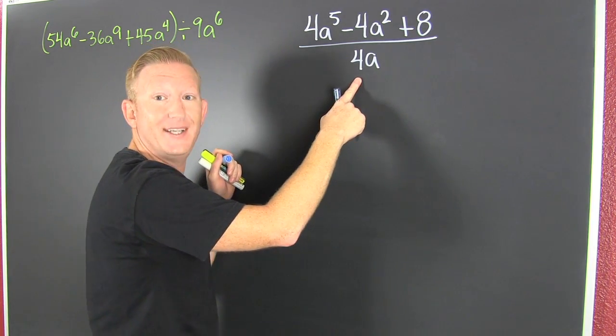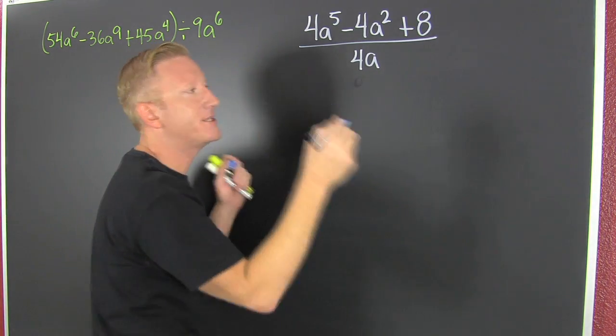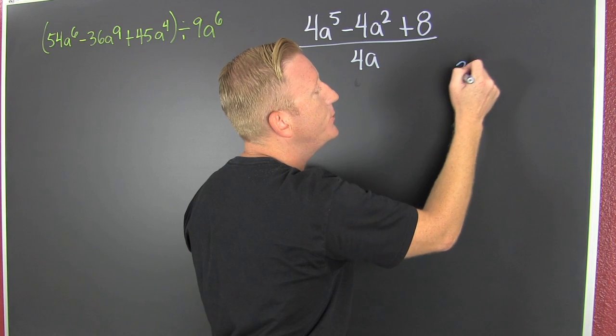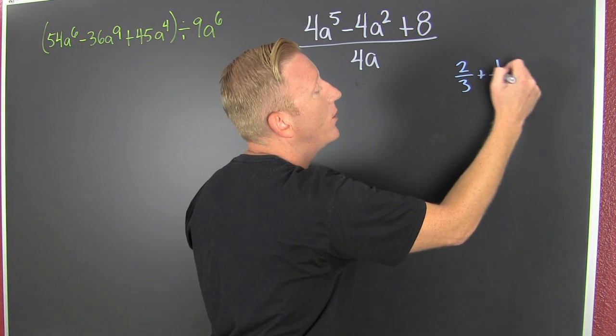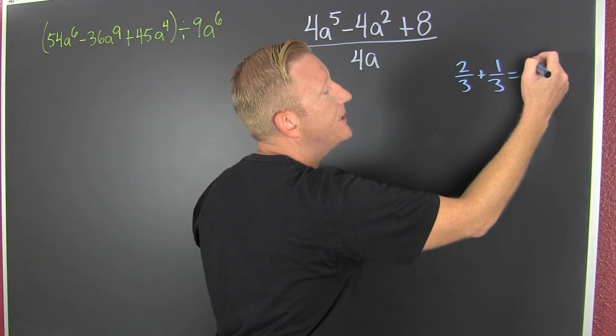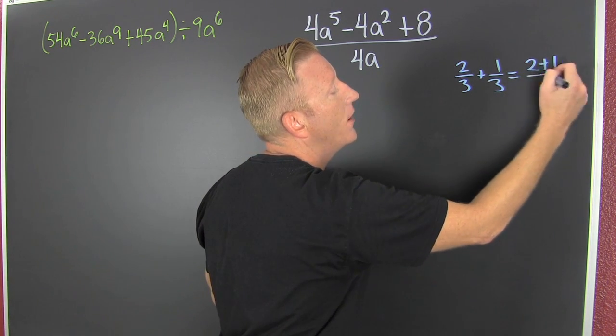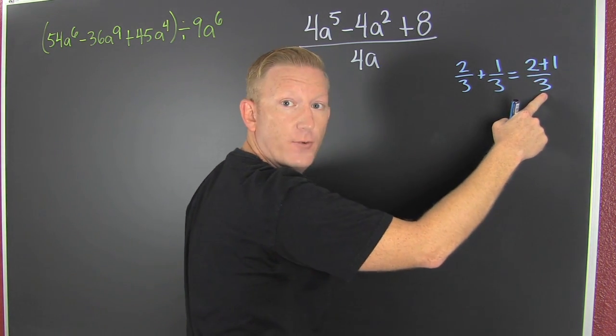So what can we do? We can go and we can un-add those fractions. What am I talking about? If I had 2 over 3 plus 1 over 3, we could see that as 2 plus 1 over 3.